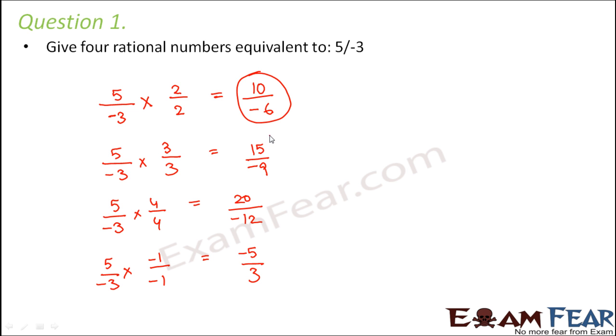So all of these numbers: 10 by minus 6, 15 by minus 9, 20 by minus 12, minus 5 by 3, these are all equivalent to 5 by minus 3.